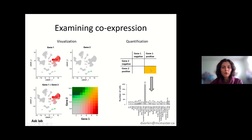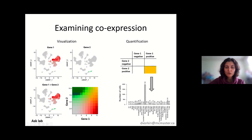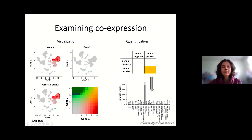Once we have those co-expressing cells, one question we can ask is which population do they belong to? A bar plot shows the number of cells expressing both genes per population — macrophages have the largest number. However, it's very important to remember that the size of the cell population can vary a lot. That's why it's also important to look at percentage, not just the absolute number of cells.